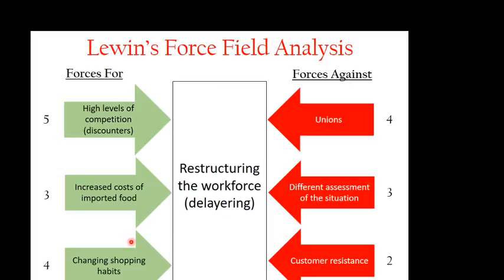The final force against is customer resistance. Customers might be concerned when they hear about changes to the staff, particularly vulnerable customers or those who have questions to ask. I've given that a two, because these are manager-type roles — the main employees that customers interact with are the shop floor staff, and this change doesn't affect shop floor staff. That gives a total score of nine for forces against.